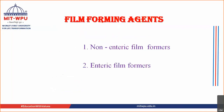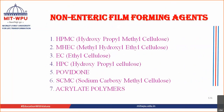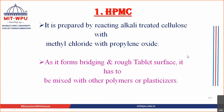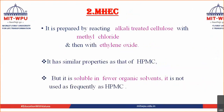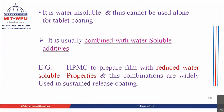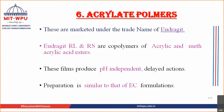Moving ahead: we studied that there are two types of film forming agents — non-enteric and enteric. We started with non-enteric film forming agents, and the examples we saw were HPMC, ethyl cellulose, hydroxypropyl cellulose, povidone, and acrylate polymers.